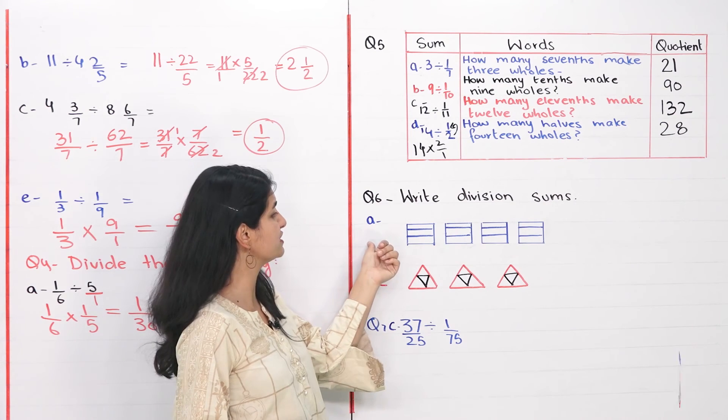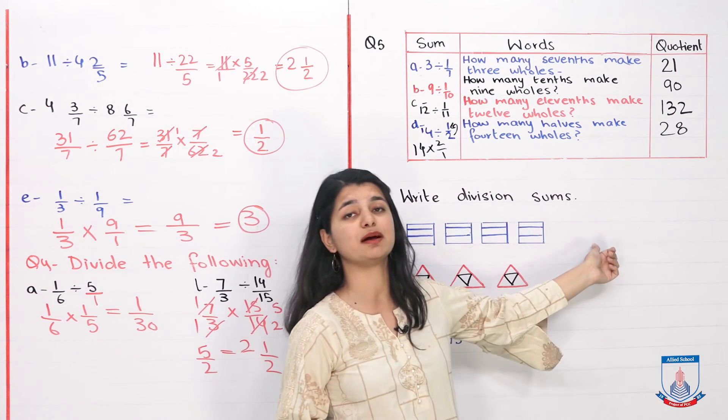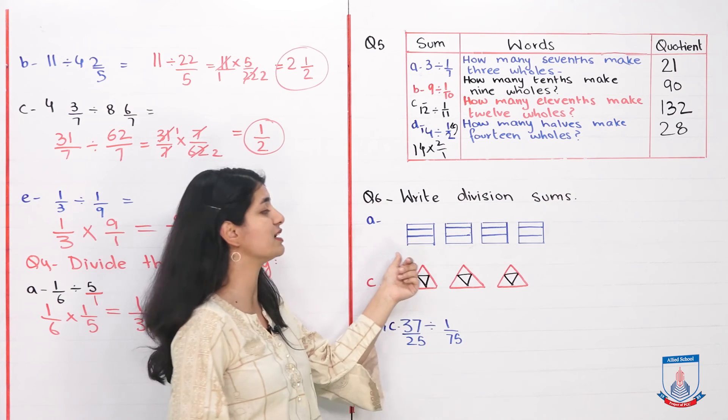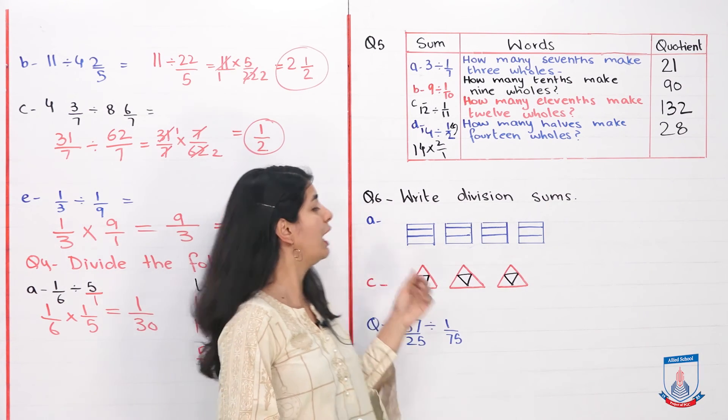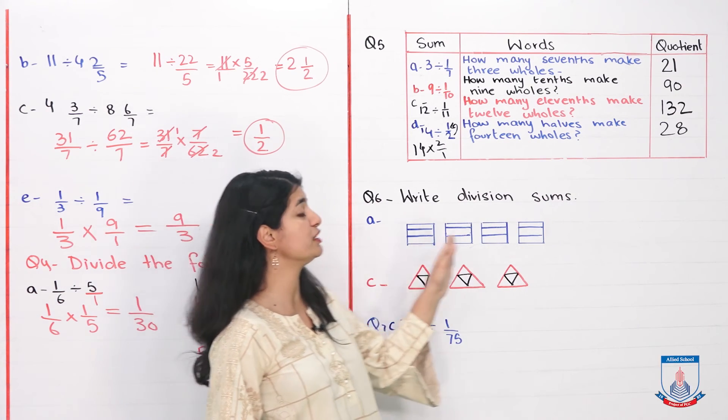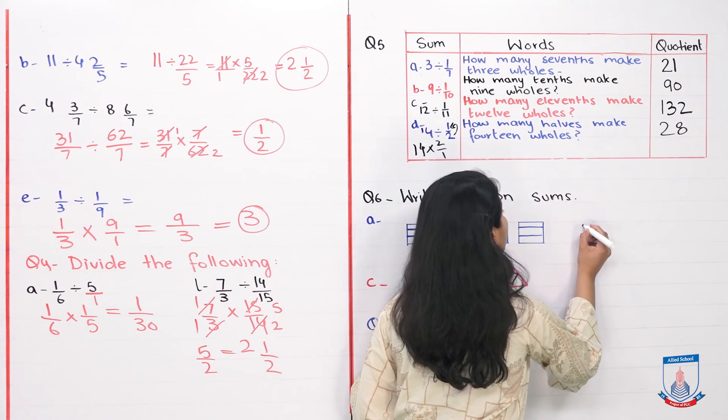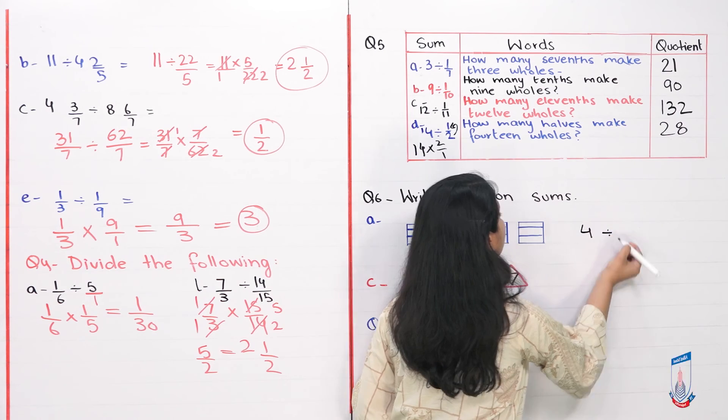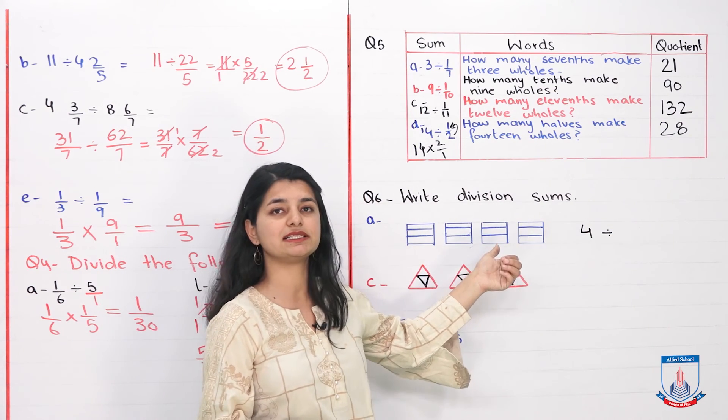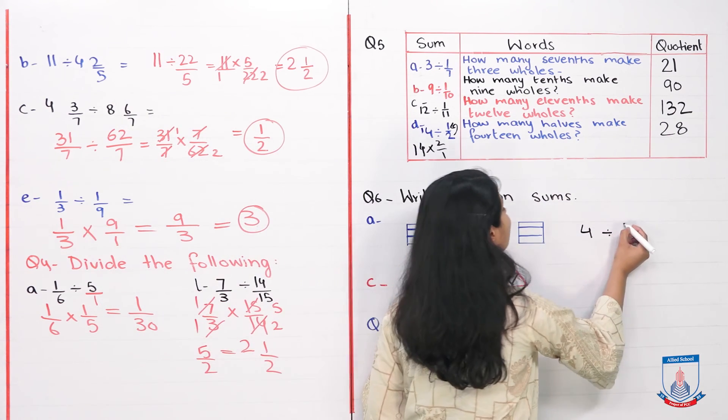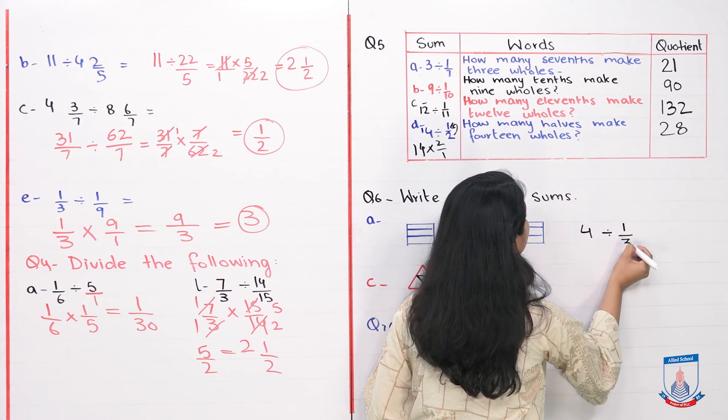If we look at the sixth question, write division sum. You have to show how you're dividing these. If we look at part A, we have 4 different squares. How are they being divided? There are 4, they're being divided. Each one is divided into 3 parts. So we can write four divided by one over three.